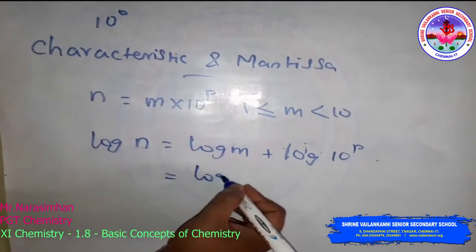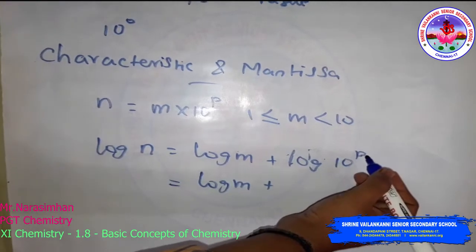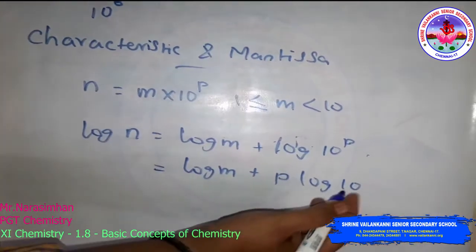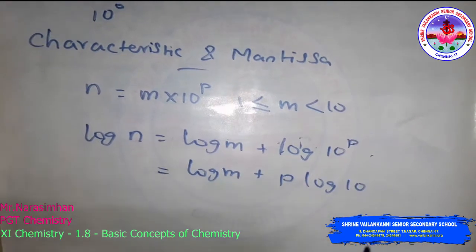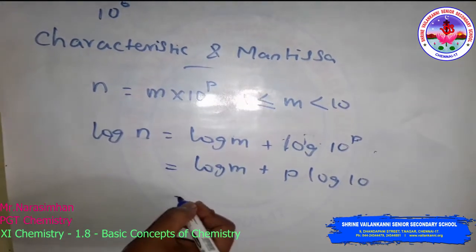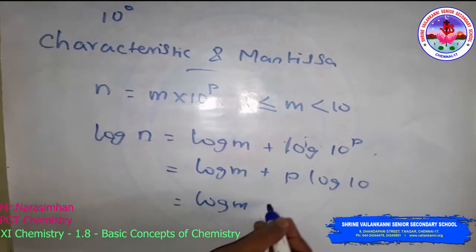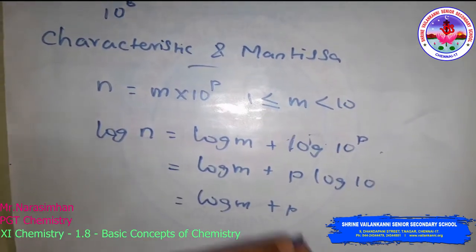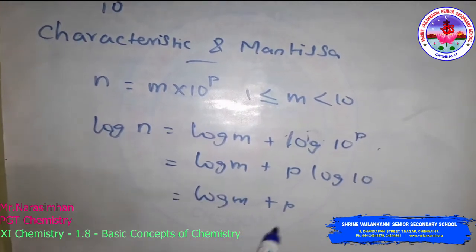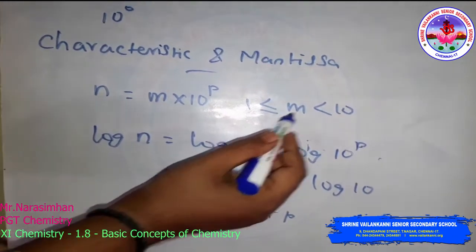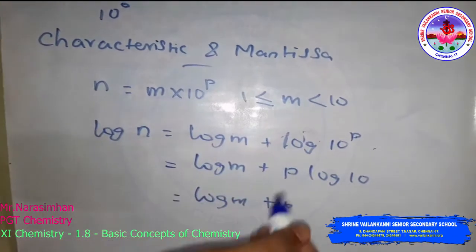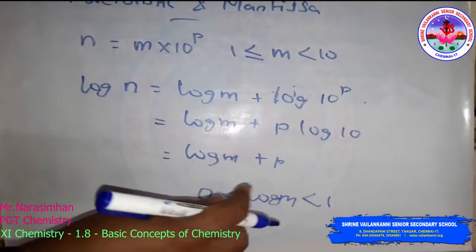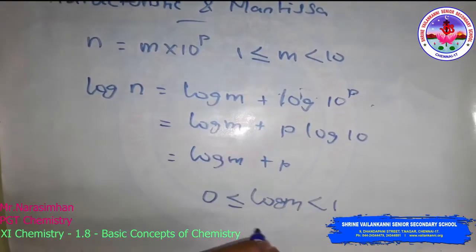Using the third law of logarithms, this simplifies to log m plus p log 10. Since log 10 equals 1, we get log n equal to p plus log m. Here p is an integer, and since 1 ≤ m < 10, we have 0 ≤ log m < 1. So log m lies between 0 and 1.